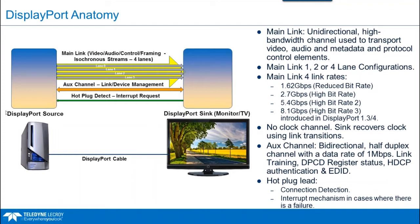The AUX channel is used for link training and DPCD register status reads and writes — I'll explain what the DPCD is in a moment. Over the AUX channel is also the HDCP authentication protocol as well as the EDID exchange. When we say bidirectional half-duplex, only one device — either the source or the sink — is transmitting at any given time. The main link can be configured in one, two, or four-lane configurations.